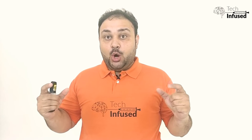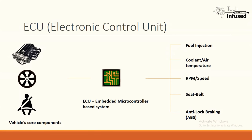Before we start understanding what OBD is and what OBD can do for us, we need to understand a very important component called ECU or Electronic Control Unit, which is present in every modern vehicle. The ECU is like an embedded microcontroller-based system which you can find in every car, and it is connected to a lot of components and subsystems inside a vehicle — like your engine, transmission system, wheels, seat belt, AC, crankshaft, and coolant.